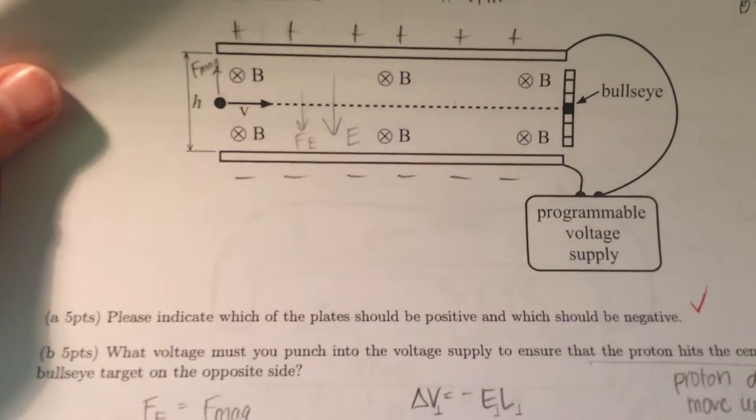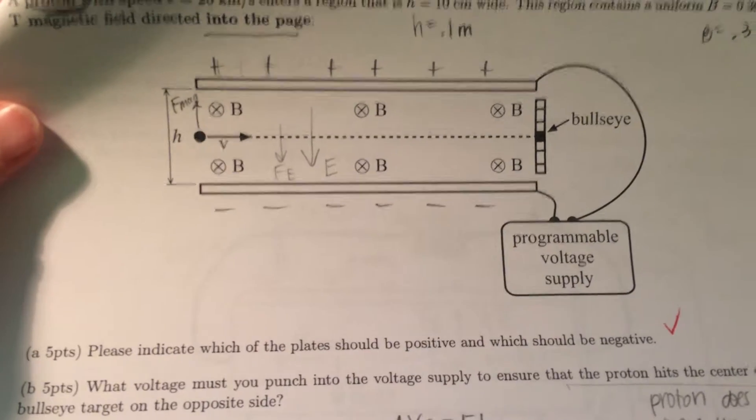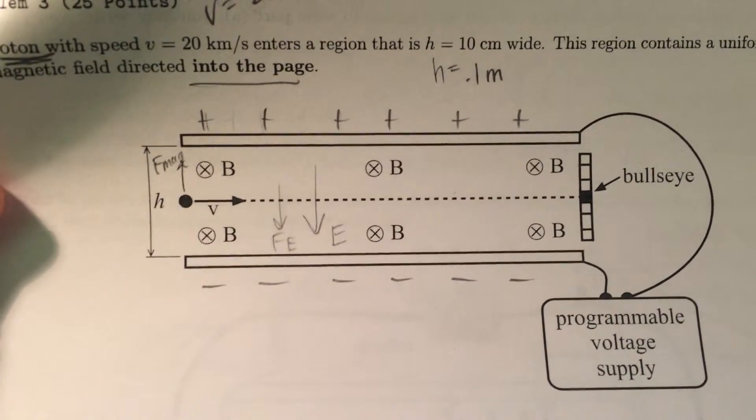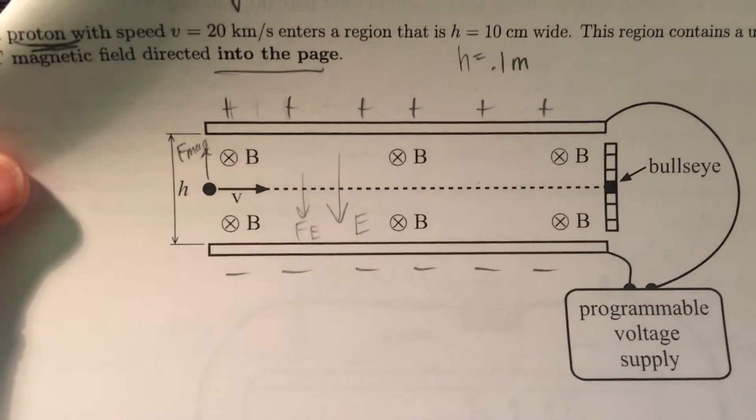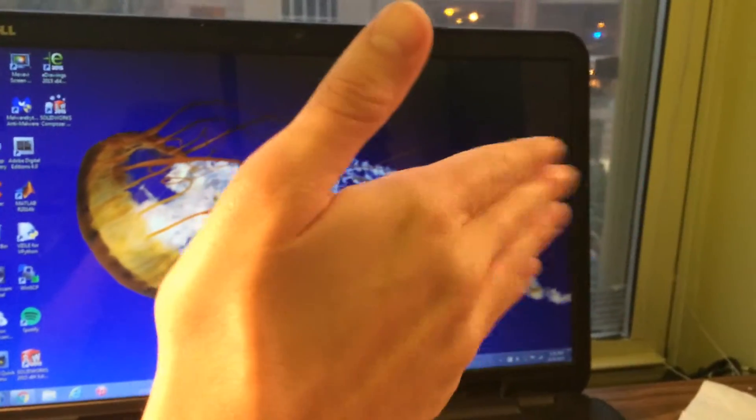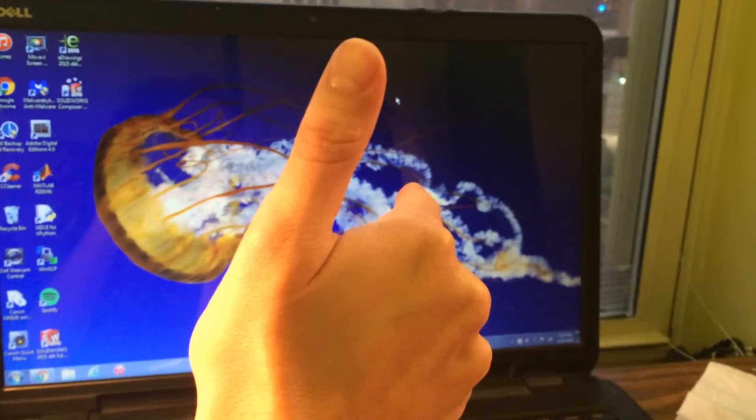So with the first question, please indicate which of the plates should be positive and which should be negative. So I know that velocity is to the right, magnetic field is into the page. So using the right-hand rule, fingers point in the direction of the velocity, they curl in the direction of the magnetic field.